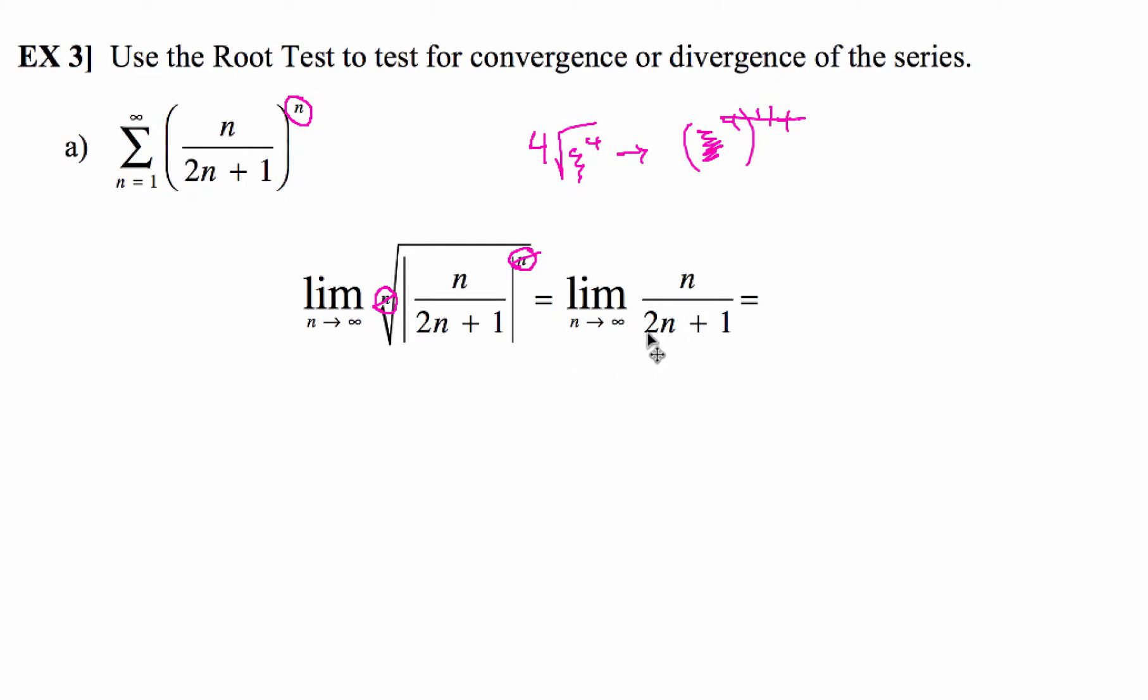Limit is n goes to infinity of n over 2n plus 1. Now, we can take away the absolute value bars because we're going to be dealing with the positive side of this. And check this out, we're only going to use the highest degree of n, this is n to the first power, which is also the same thing in the denominator,